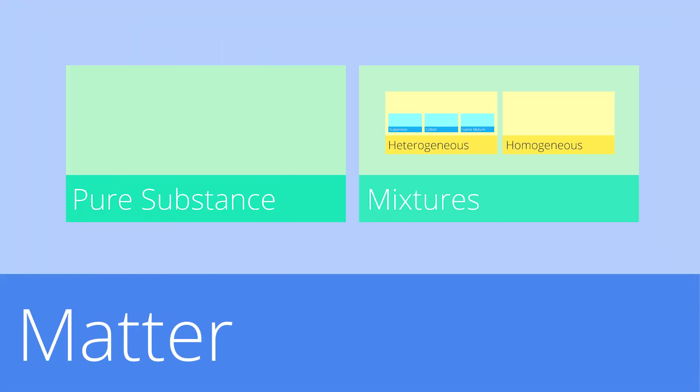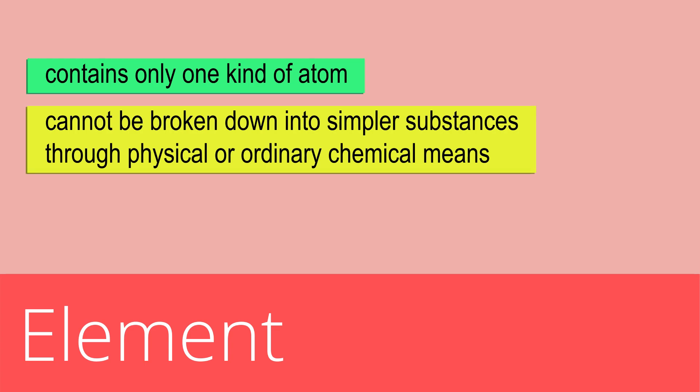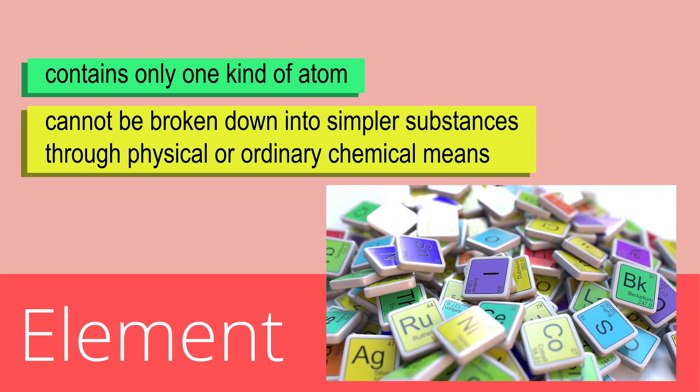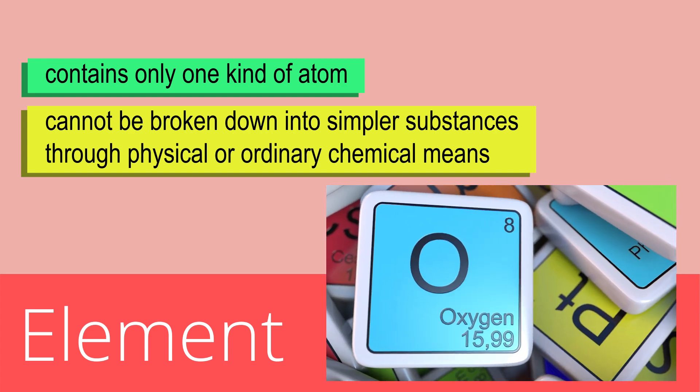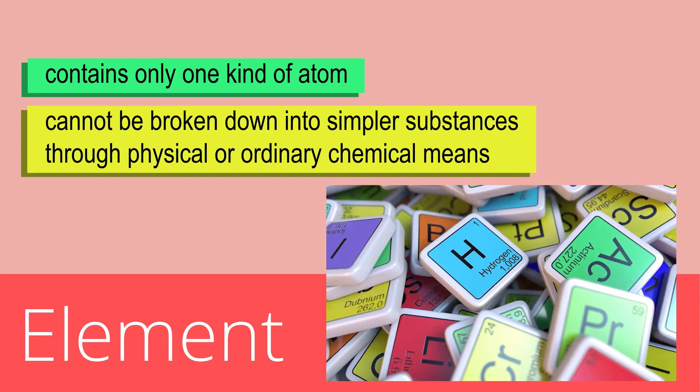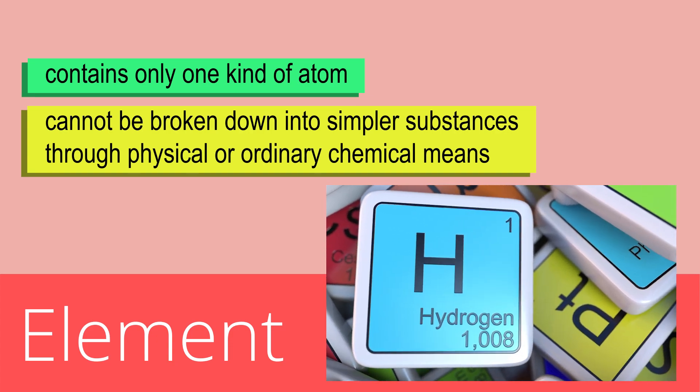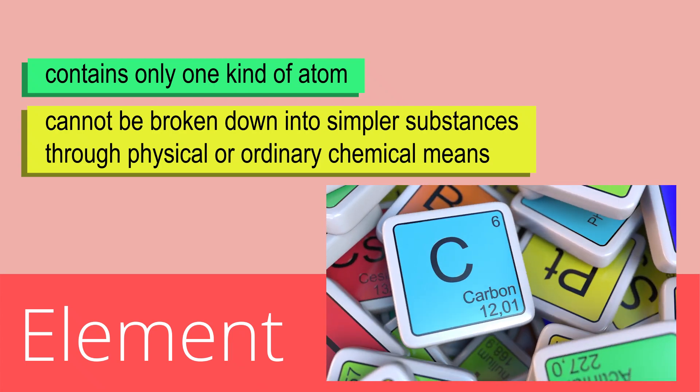It is possible to further identify a pure substance as either an element or a compound. An element is considered to be the simplest type of matter, since it contains only one kind of atom. It cannot be broken down into simpler substances through physical or ordinary chemical means. Examples of elements include carbon, oxygen, and hydrogen.